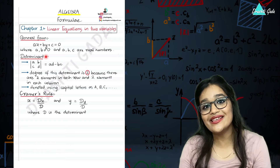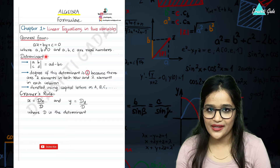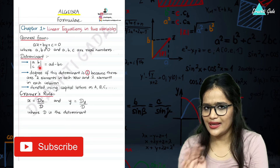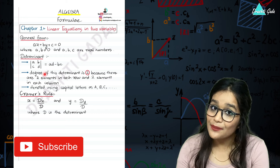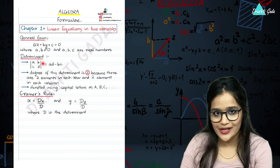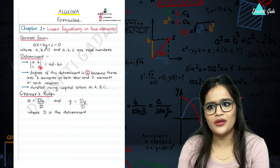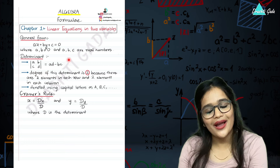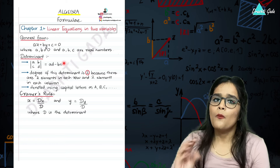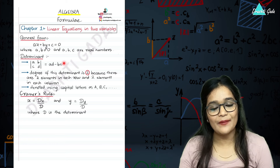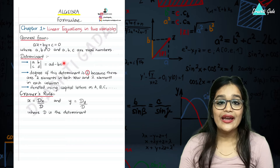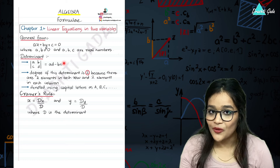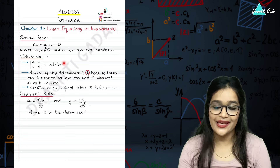The second important thing in this chapter is how to calculate a determinant. For example, if you have a determinant with four elements a, b, c, d — to calculate it, you cross multiply: multiply a and d, multiply b and c, then subtract both. So you get a·d minus b·c as the answer. Most of the time we ask in objectives: what is the determinant, what is the degree? The degree is 2 because every row or every column has two elements.